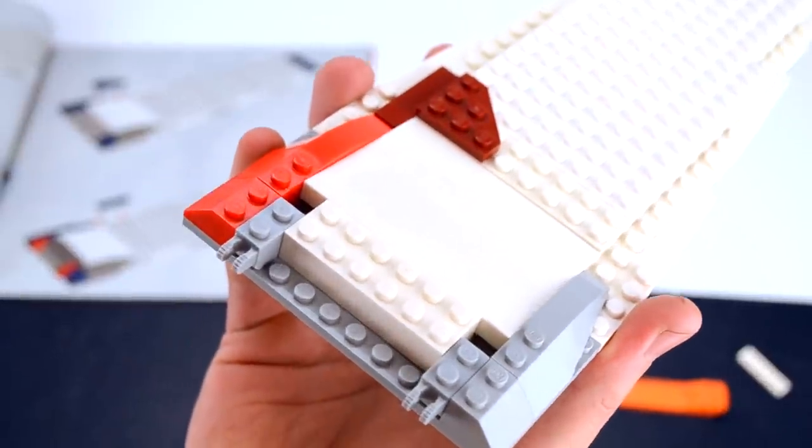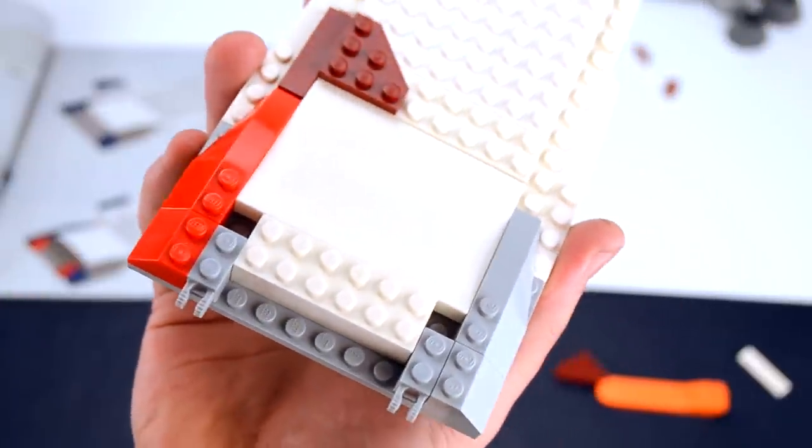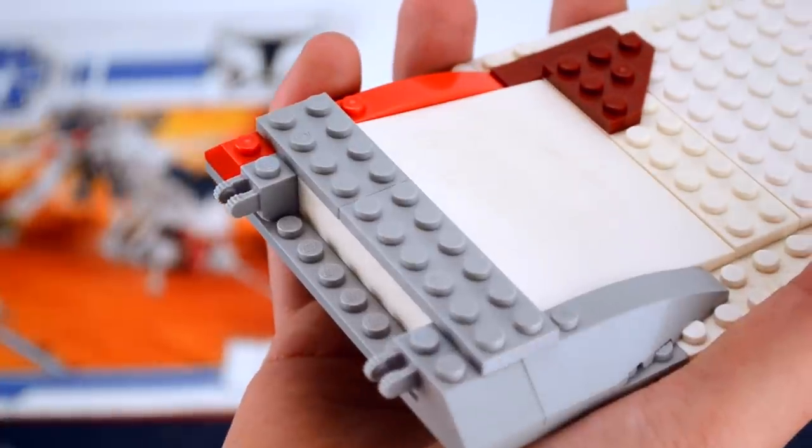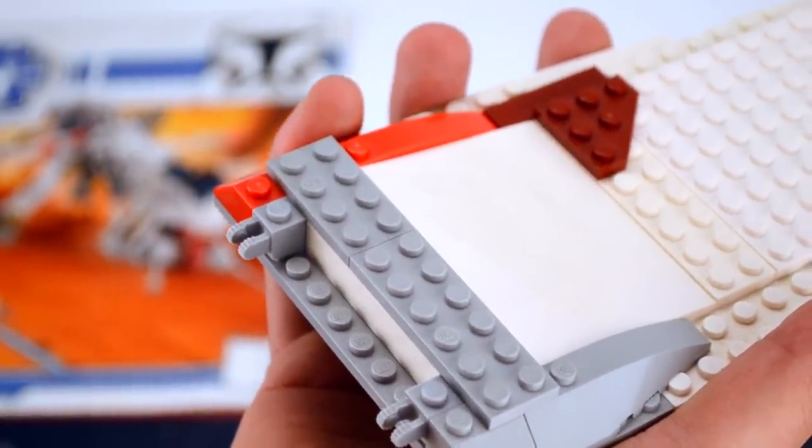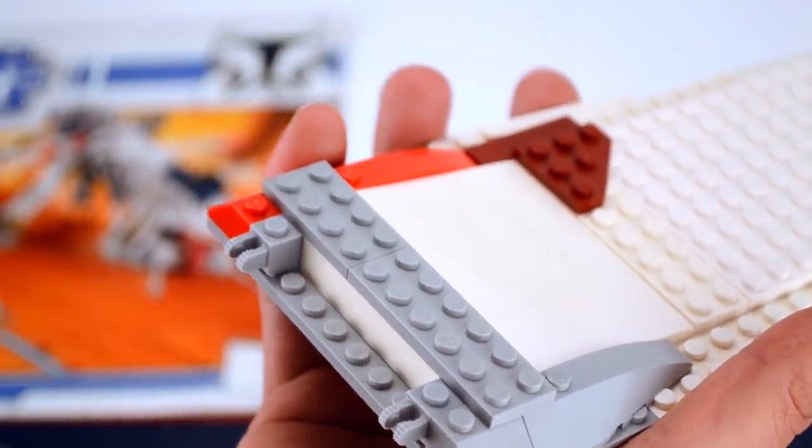This section of the wings are slightly different to the instructions, so just do what I've done here on both sides. I also substituted the 2x10 flat with the 2x4 and 2x6 flat.